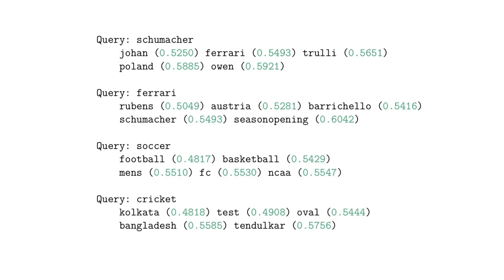Sachin Tendulkar was an amazing cricket player for a really long time. You can see 'Kolkata' associated with a good IPL team. So it's quite interesting to visualize these embeddings in this qualitative way and look at what the model is actually learning underneath.